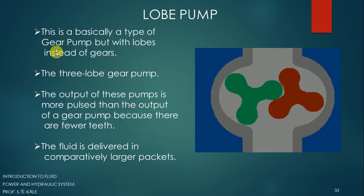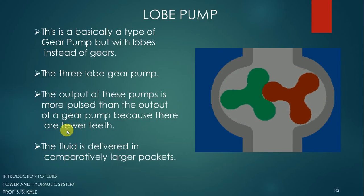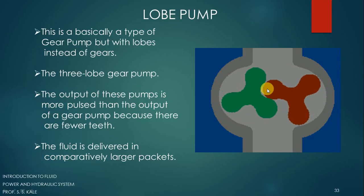The lobe pump is basically a type of gear pump but using lobes instead of gears. This is a three-lobe gear pump. The output of this pump is more pulsating than that of a gear pump because there are fewer teeth — very few lobes are present compared to a gear pump — and that is why the output is pulsating.